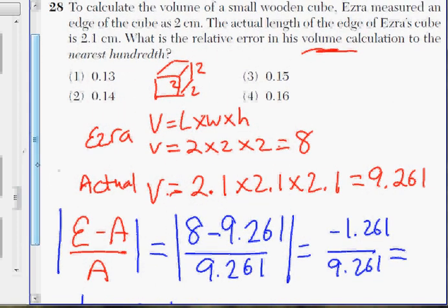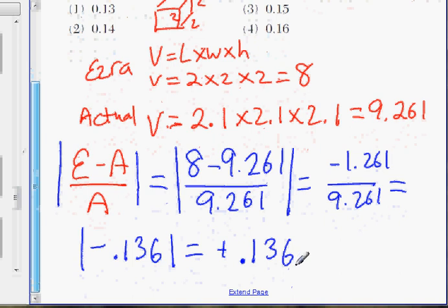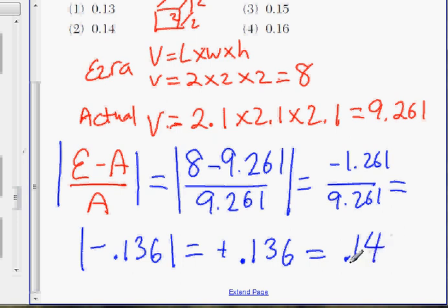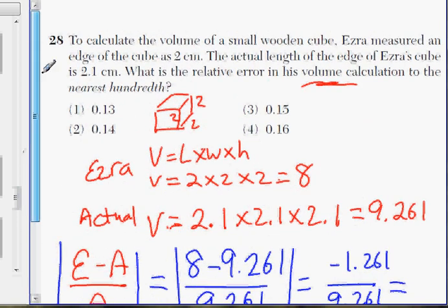We're rounding off to the nearest hundredth. So let's round this off, 6 here. We're going to round it off, and that's going to be 0.14 to the nearest hundredth. And that would be choice 2.